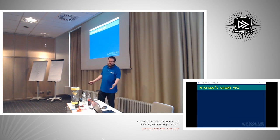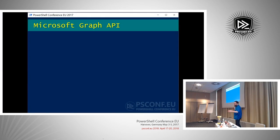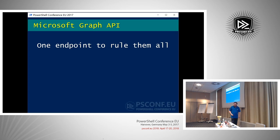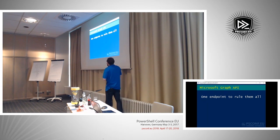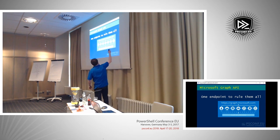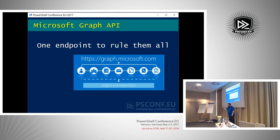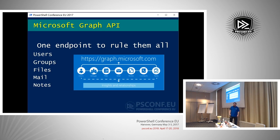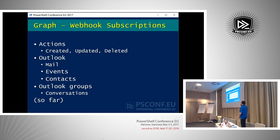The Graph API slogan is 'one endpoint to rule them all' — I once played Lord of the Rings music in a demo for that. The idea is that the Graph API is your one entrance to all of Office 365 and other online solutions like Intune. You can create users in Azure AD, configure machines in Intune, change stuff on OneDrive, and much more. Go to graph.microsoft.com and it shows everything you can do — users, groups, files, emails, notes, OneNote, contacts, tasks, and Intune — and this graphic is already old because there's much more now.